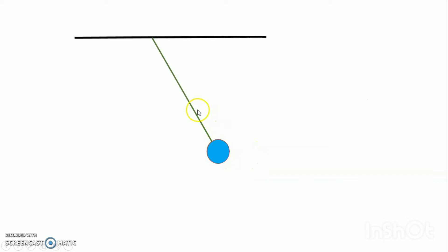This is the bob. You have already seen this is the bob in my three-dimensional videos. This is the frictionless pivot and this is the length of the pendulum.